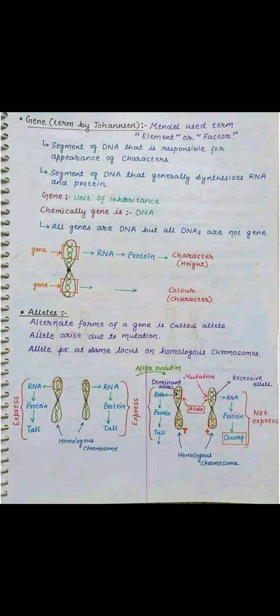An allele is the alternate form of a gene; it occurs due to mutation. Alleles are present at the same locus on homologous chromosomes. Here you can see the homologous chromosomes — the dominant allele expresses through RNA and protein to produce a tall phenotype, while after mutation another allele arises that is the recessive allele, which is not expressed. So tall is the dominant allele while dwarf is the recessive allele.